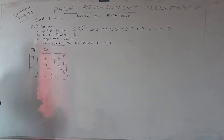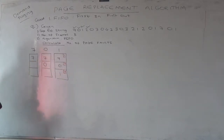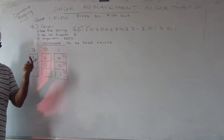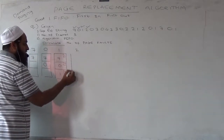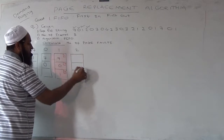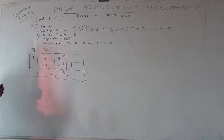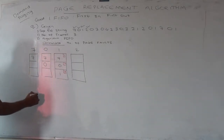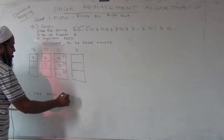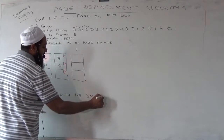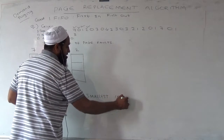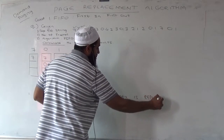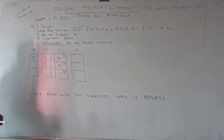Now from here, the algorithm starts — pay attention. With red, I am marking the indexes of each frame. Now which is the next page? Next page is 2. What will I do first? Look for that page — whether it is there in memory. If it is there in memory, then I don't have to bring it in again. So is 2 available in memory? No. I have to get it. Then which page will it replace? The page with the smallest index is replaced. Which is the smallest index?